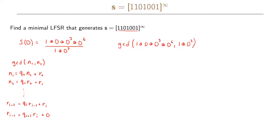When we got the remainder 0, we knew that the previous non-zero remainder was our greatest common divisor between n1 and n2. Now we want to do exactly the same thing but for polynomials. In the first step, we want to write D^7 + 1 as some quotient times D^6 + D^3 + D + 1, plus some remainder. Let us perform this division.